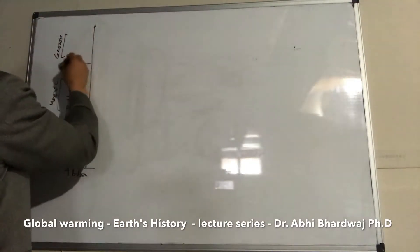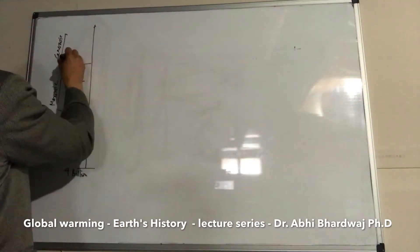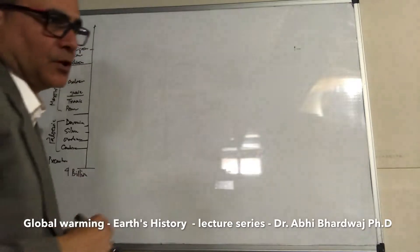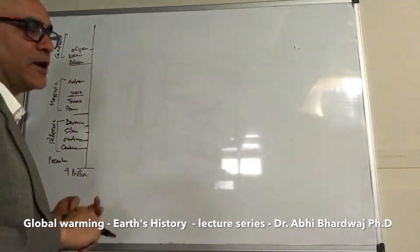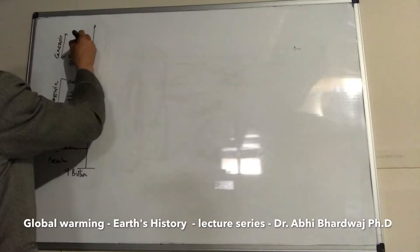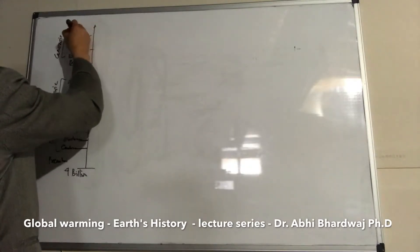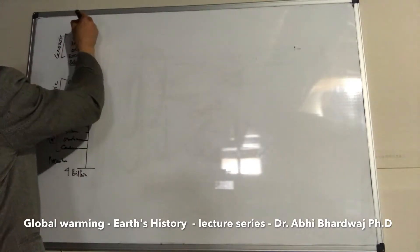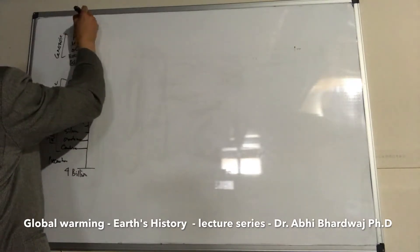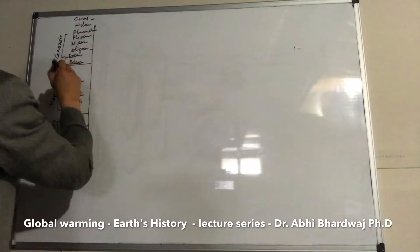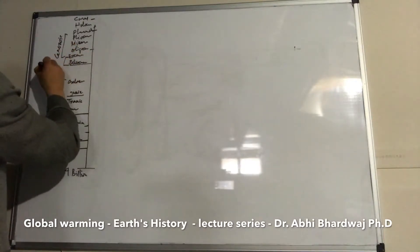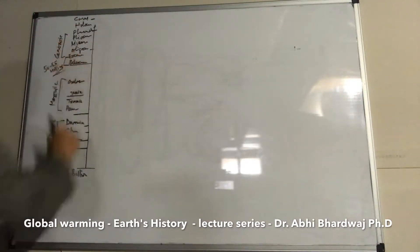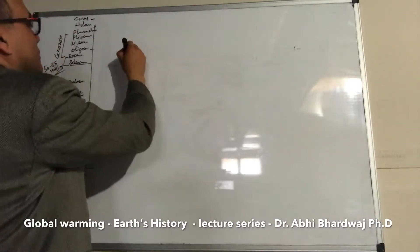The Cenozoic starts with Paleocene, Eocene, Oligocene, Miocene, Pliocene, Pleistocene, and the latest one is Holocene, followed by the current period. I'm particularly interested in the Eocene and Pliocene, which was about 50 to 55 million years back. Let me draw a graph to illustrate what happened during this time.